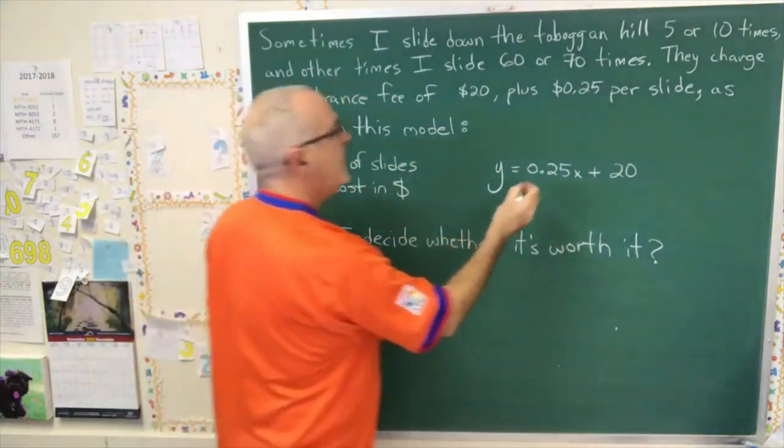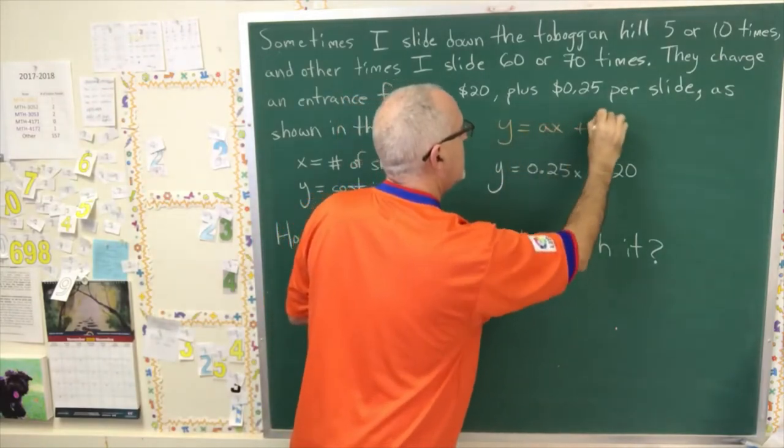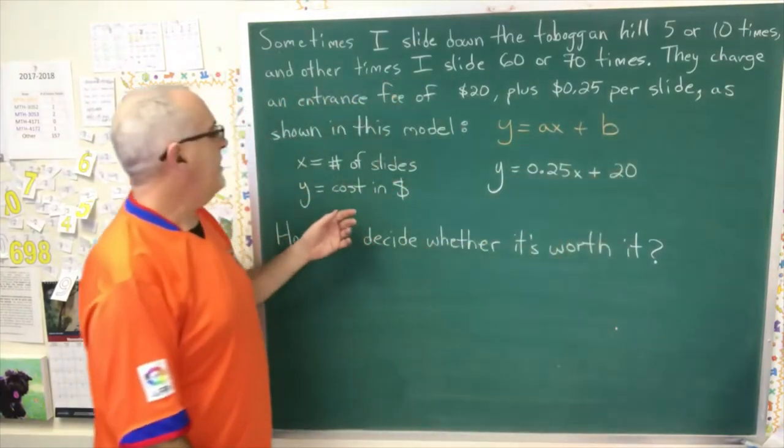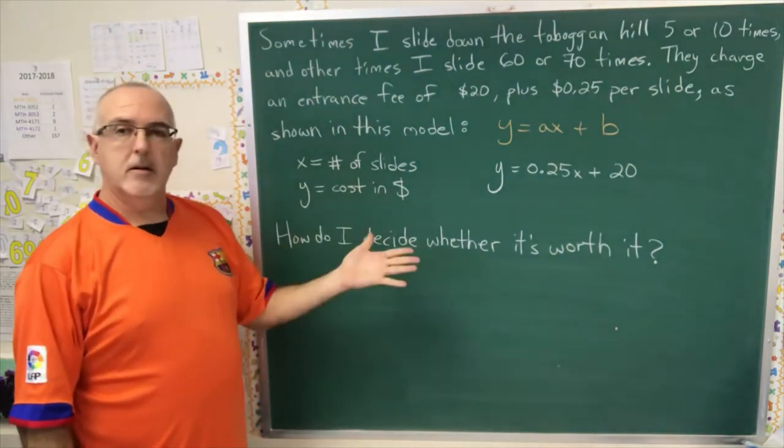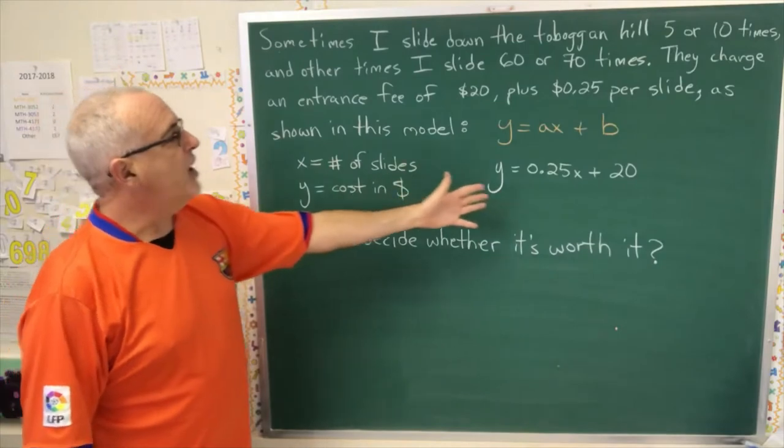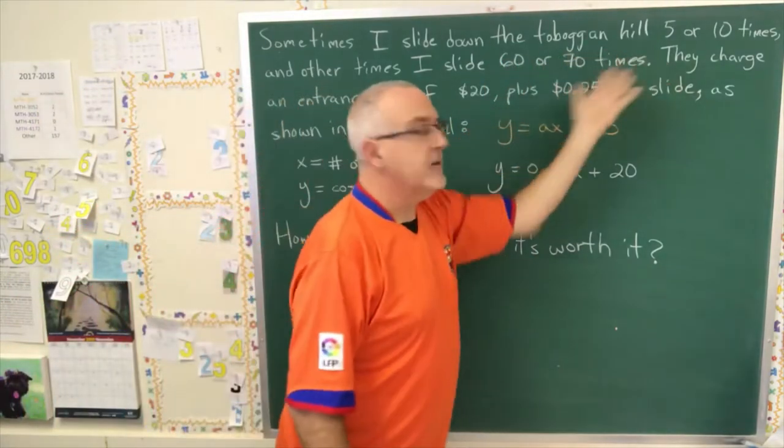It's in the form y equals ax plus b, where x is the number of slides and y is the cost in dollars. We can use this model to figure out how much it's going to cost me, depending on the number of slides that I do.